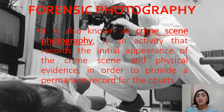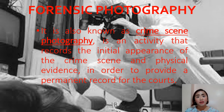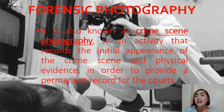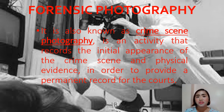The next type of photography is forensic photography, also known as crime scene photography. It is an activity that records the initial appearance of the crime scene and physical evidence in order to provide a permanent record for the court. In forensic photography, you cannot alter the position of your subject or change the lighting, because doing so means tampering with evidence, making you liable under the law. The main idea is to capture the information or evidence as realistically as possible, depending on what you have seen at the crime scene itself.